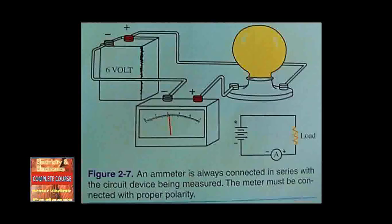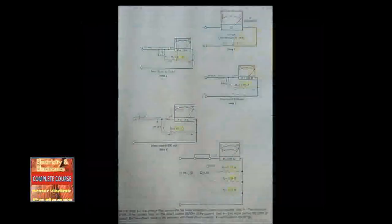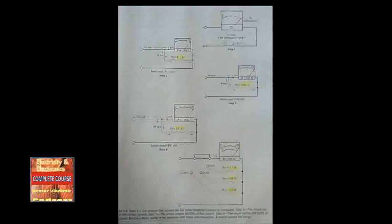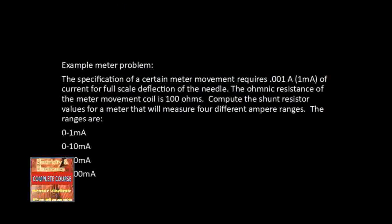To connect an ammeter to a circuit, one usually has to make an open or disconnect some device in the circuit, allowing you to insert the ammeter in series with the circuit or device you are measuring. Example: The specification of an ammeter movement requires 0.001 amp (1 milliampere) for full scale deflection, and the ammeter coil resistance is 100 ohms. Compute the shunt resistor values for ranges of 0–1 milliamp, 0–10 milliamp, 0–50 milliamp, and 0–100 milliamp.